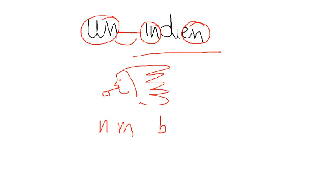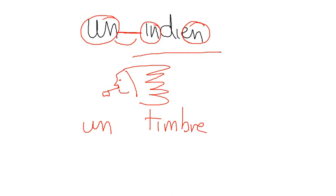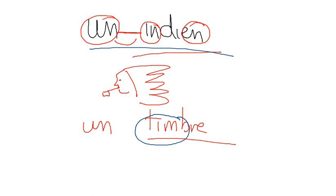Remember how we said that N can be replaced by M if there is a B or a P? Well — un timbre, which means a stamp for the post, but it also means the tonality and that specific characteristic in your voice. Let's try to say it together: un timbre. Un timbre. Very good — un timbre, un indien.